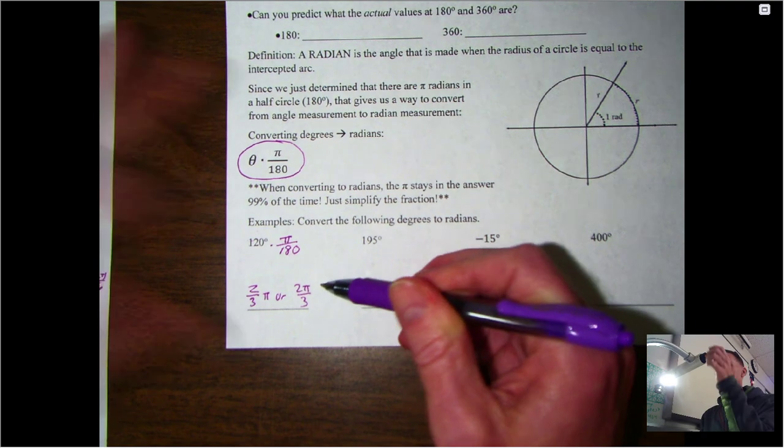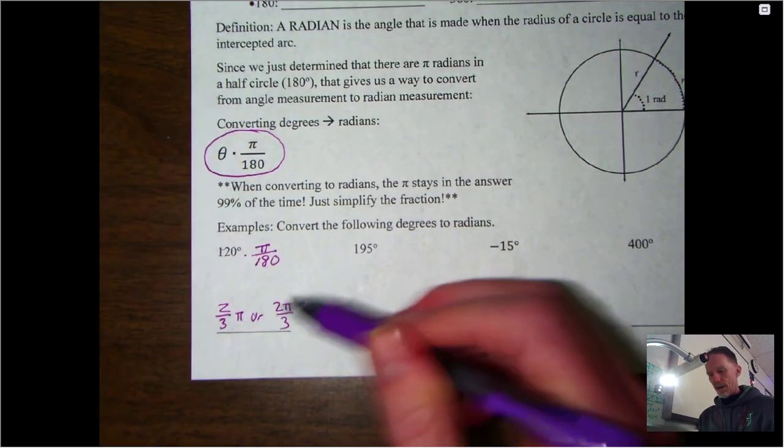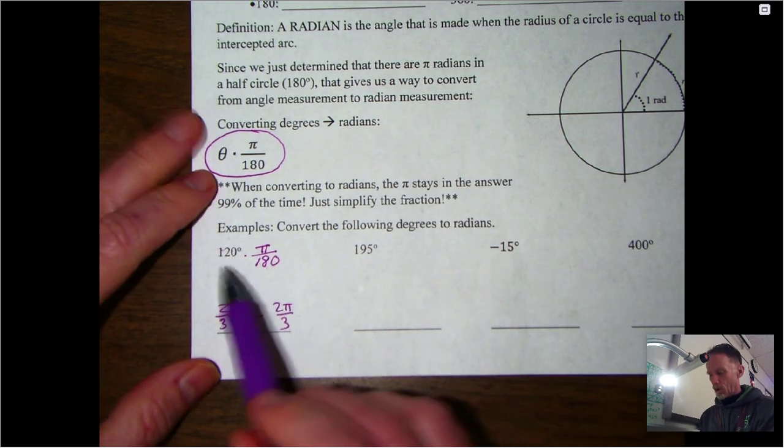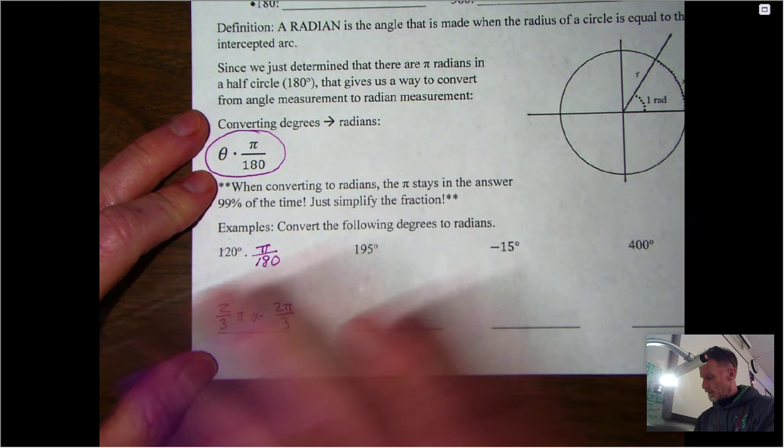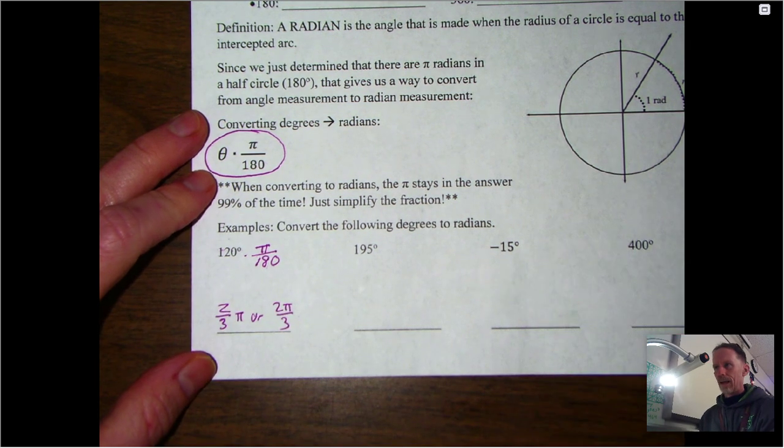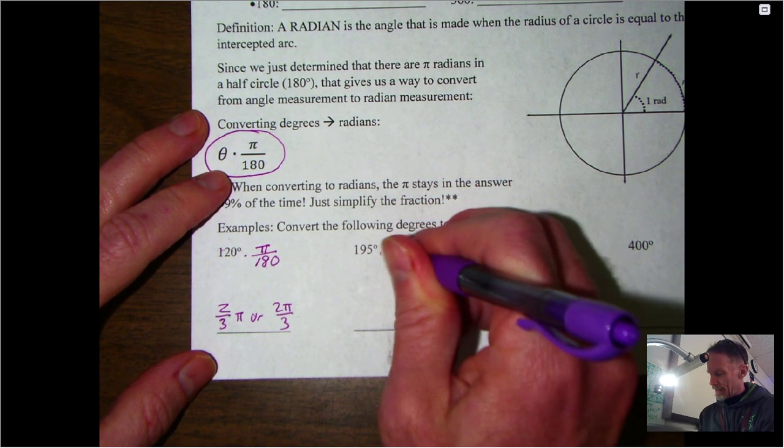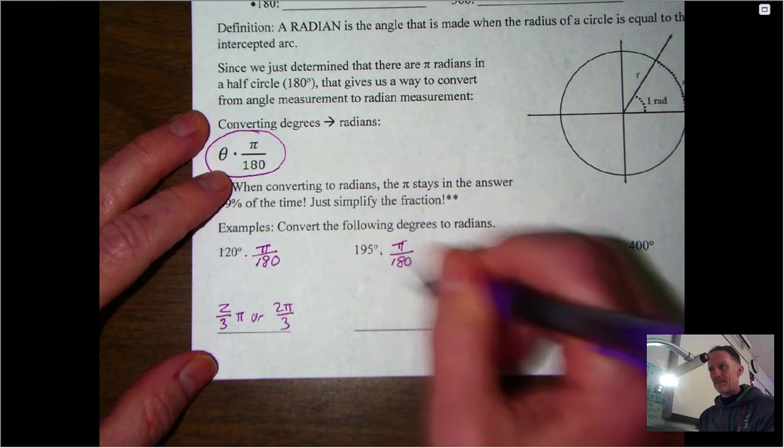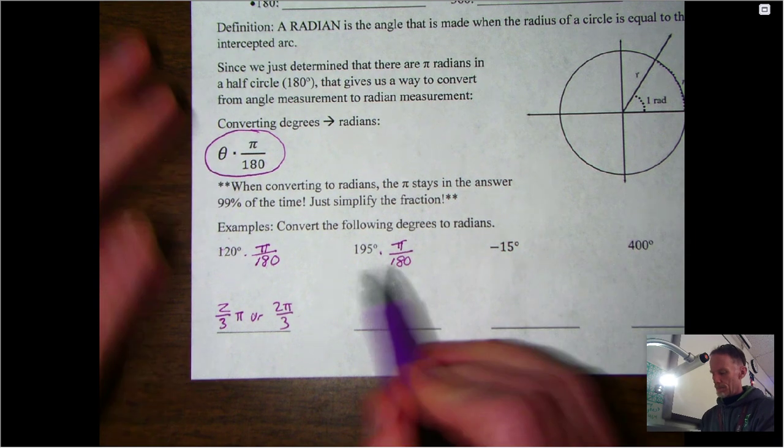So start with degrees, multiply by π over 180, simplify the fraction, and then you have your radians. Let's do this again: π over 180. Notice I'm not taking the time to go through how to simplify fractions—you should know how to do that without a calculator. 195 over 180 is 13 over 12, so again, 13π over 12.